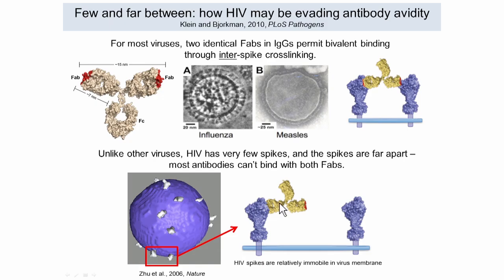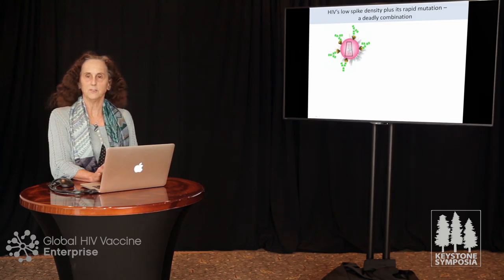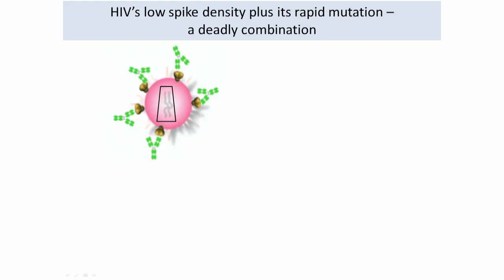When you try to get an IgG to bind to these spikes, it cannot cross-link between adjacent spikes because they're too far away. HIV spikes are also thought to be relatively immobile on the timescale of antibody binding, so you're not likely to get inter-spike cross-linking. We think the combination of HIV's low spike density plus its rapid mutation means intrinsic affinity between a Fab and the envelope spike will become lower and lower. At first that doesn't matter, but as the spike mutates enough, you can't overcome the lowered affinities through inter-spike cross-linking.